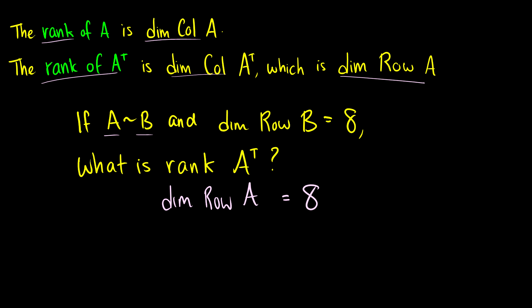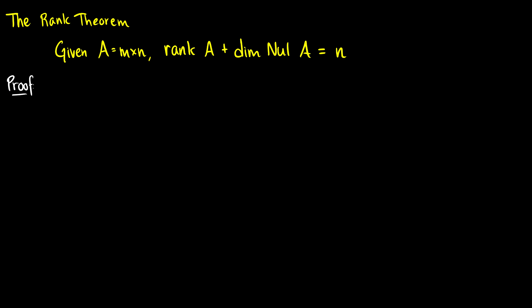So that's the introduction to rank. We have a theorem called the rank theorem. Given a matrix A which is m by n, we say that the rank of A plus the dimension of the null space of A is equal to N. So the dimension of the column space of A plus the dimension of the null space of A equals N. For example, if A is 3 by 7, then the dimension of the column space plus the dimension of the null space will equal 7.